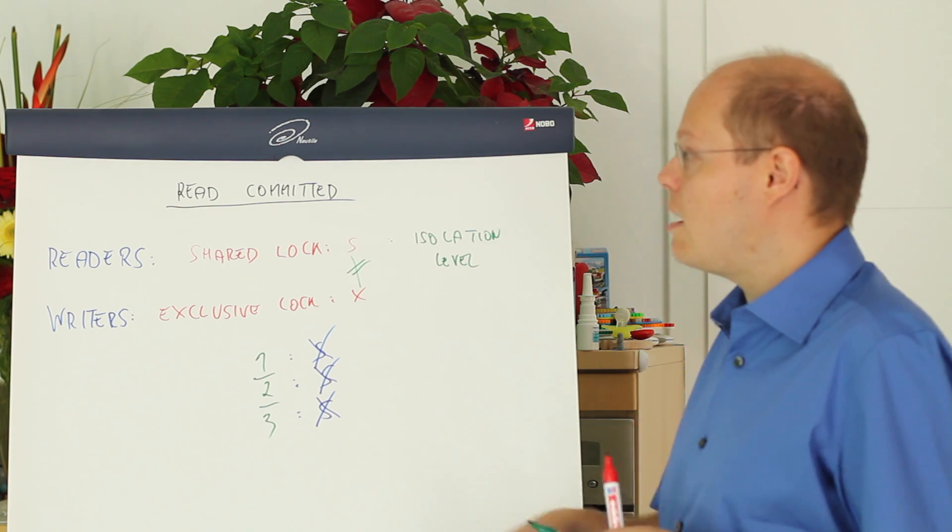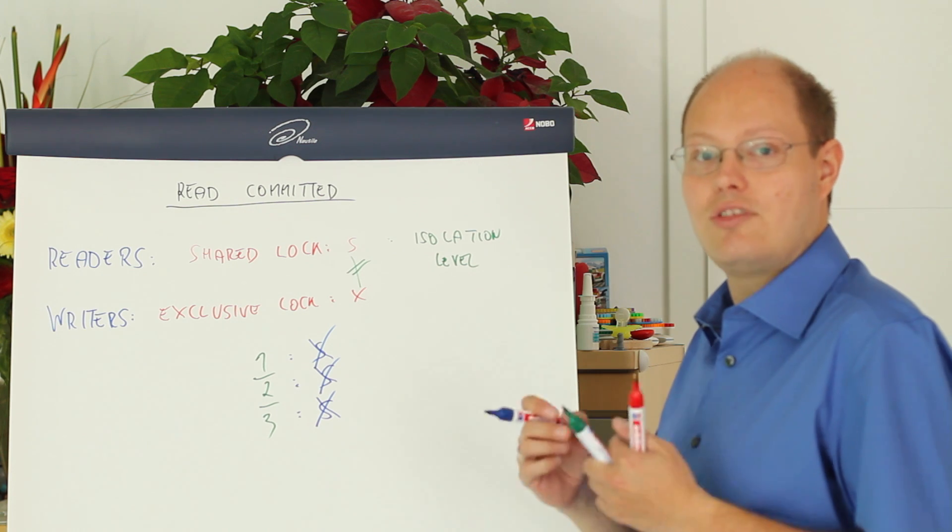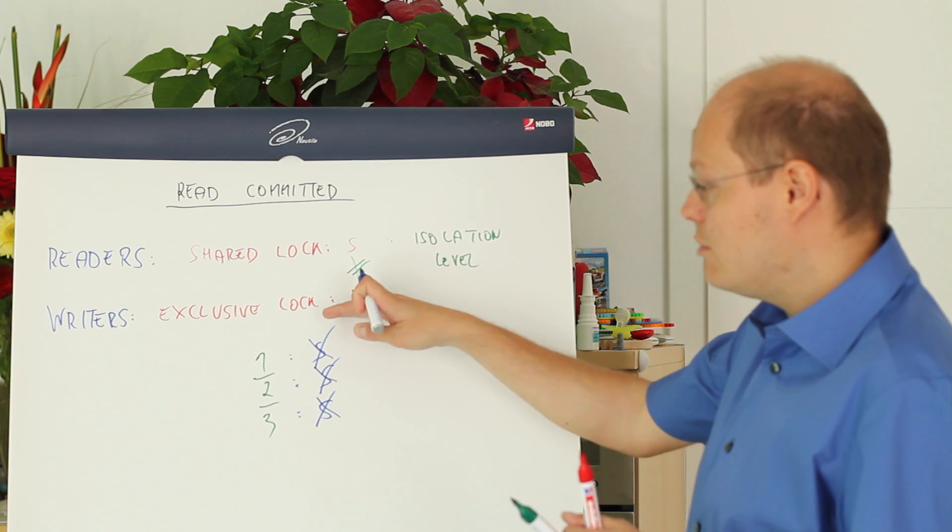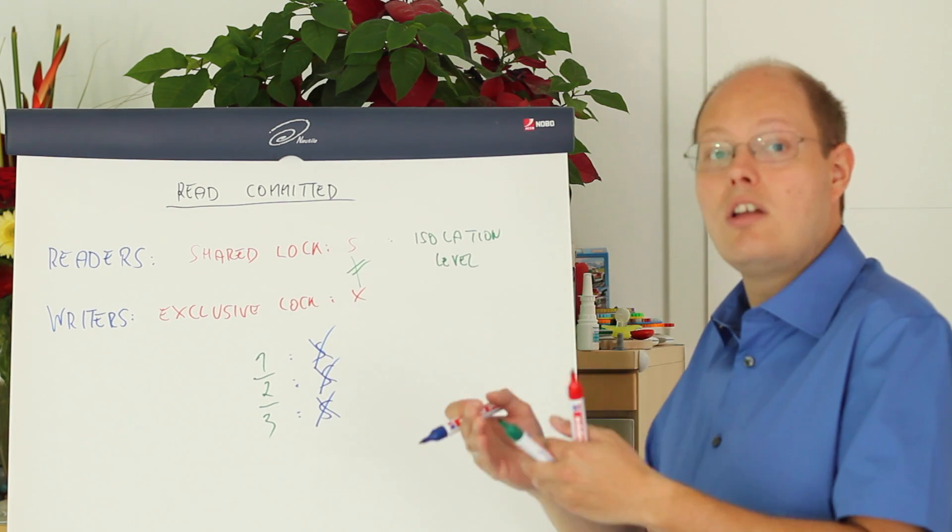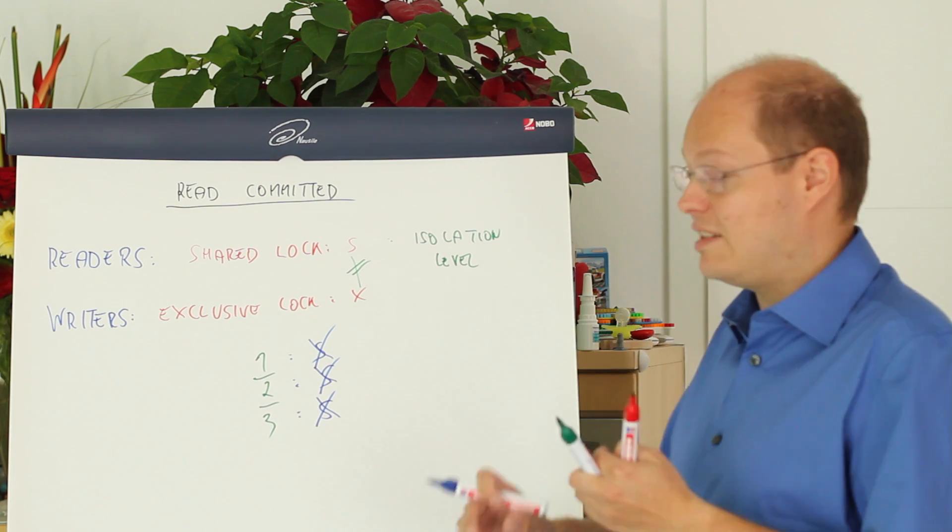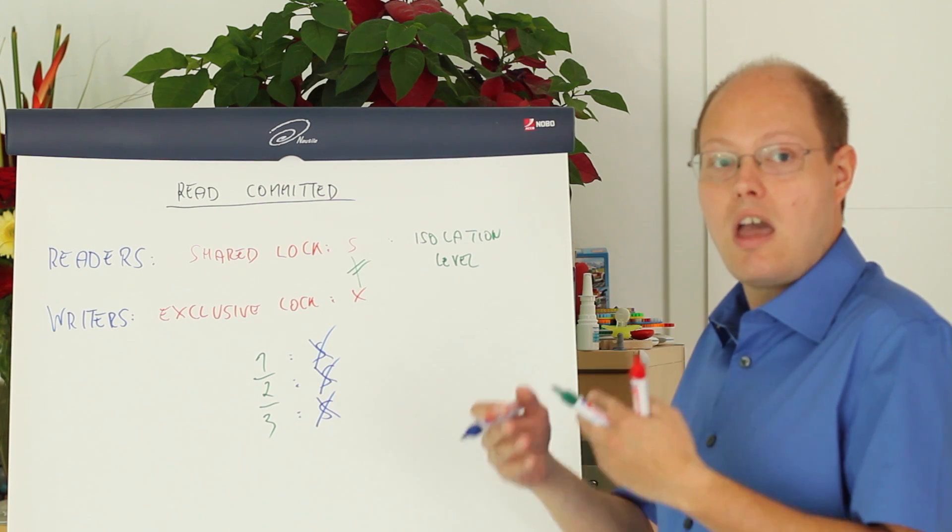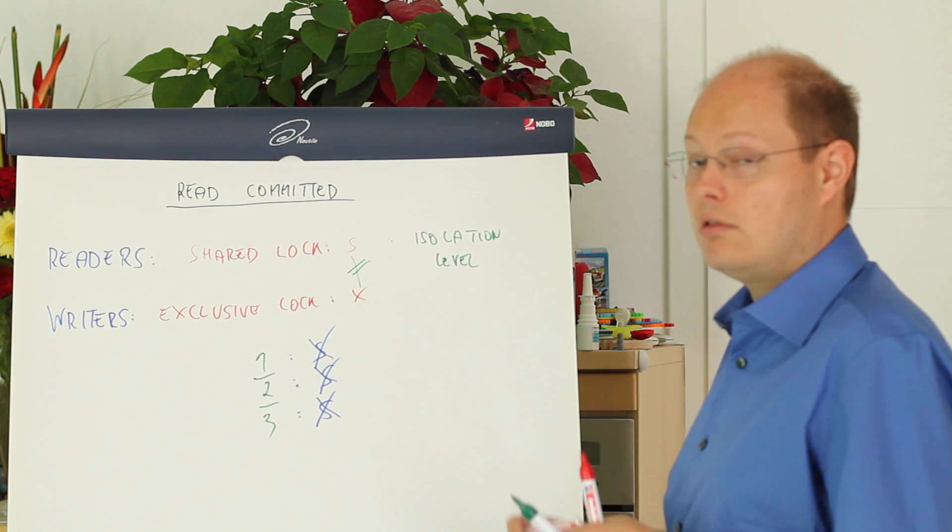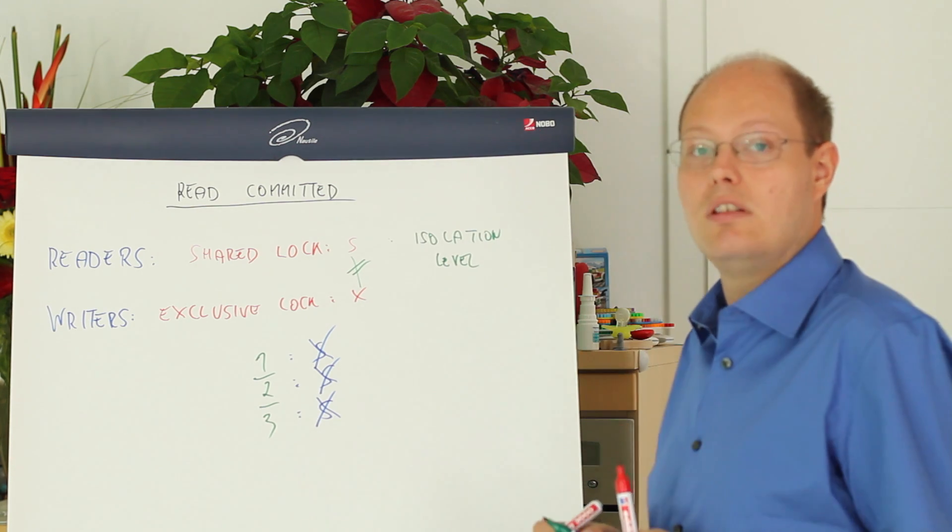The problem that we have with the isolation level read committed is that we don't have a so called read stability. Read stability means when you are reading these records multiple times within your transaction you would get back the same information. So every record just looks the same as you have seen that record previously. By default in the isolation level read committed we have no read stability.